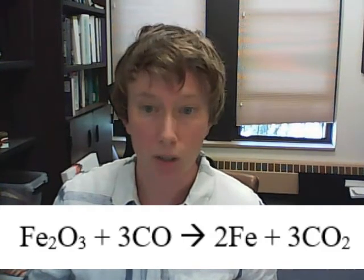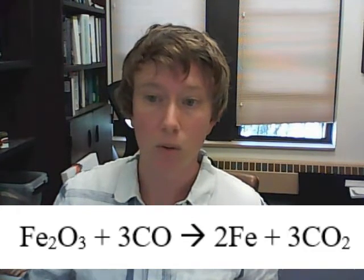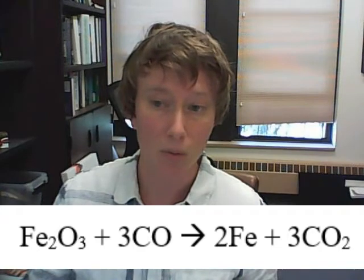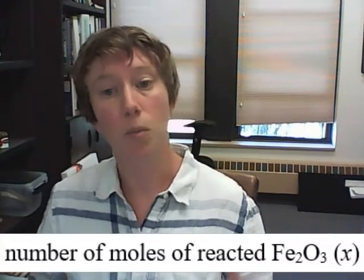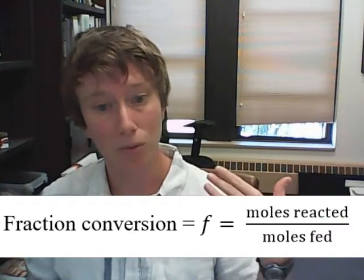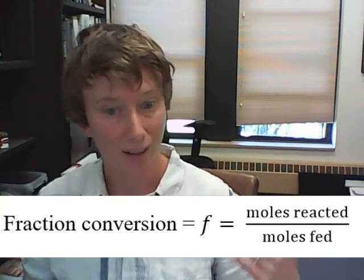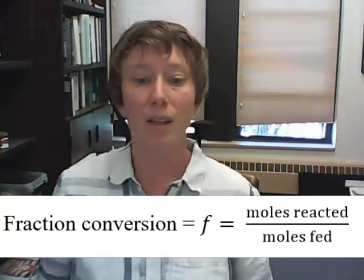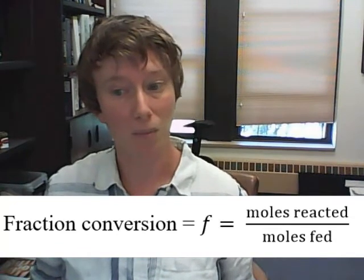Let's look at this batch reaction. We can use the number of moles of reacted Fe2O3, x, to calculate the amounts of the other reactants and products. Let's say we have a certain number of moles of Fe2O3 present at the start of the reaction, n Fe2O3 naught. We know the number of moles present at the end of the reaction is going to be the difference between that starting concentration and the number that reacted. We can also calculate a fraction conversion or F - that's the moles reacted divided by the moles fed, x divided by n Fe2O3 naught.